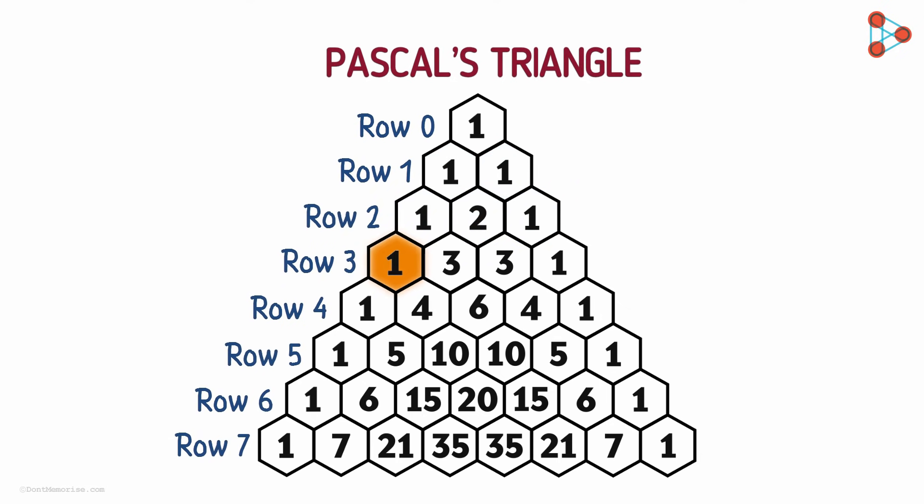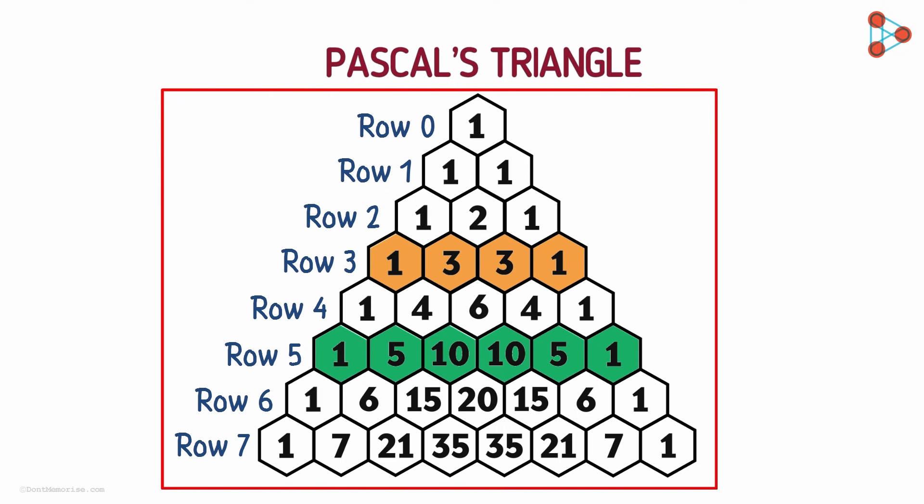The third row is 1, 3, 3, 1. The fifth row is 1, 5, 10, 10, 5, 1 and so on. And you may be wondering why we need such a triangle? What do we even do with it? Don't worry, you'll get to know that soon.